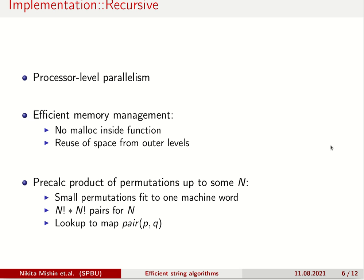What can we do about this? First, we can apply processor level parallelism, since each set of tasks on the same recursion level are independent of each other. Second, we can efficiently manage used memory, so that we allocate memory outside of multiplication and reuse memory from outer levels. Also, we can pre-compute all products of permutation up to some big N. So, instead of going on a deeper level of recursion, we can just look up in the pre-computed table.